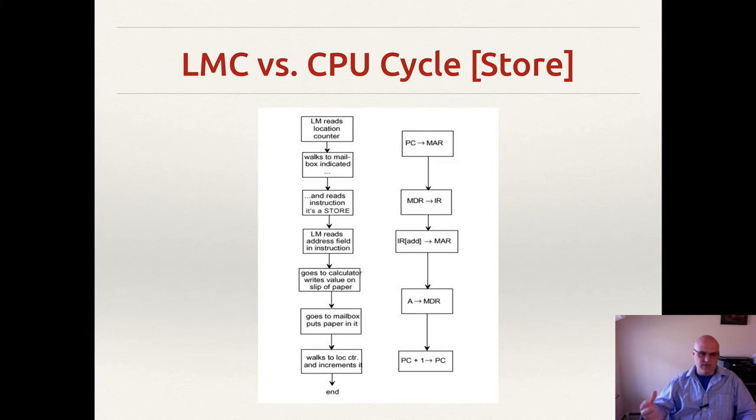And then that was his execute. And then he incremented the program counter and he did it all over again. Now, how would that same operation happen in a real machine?